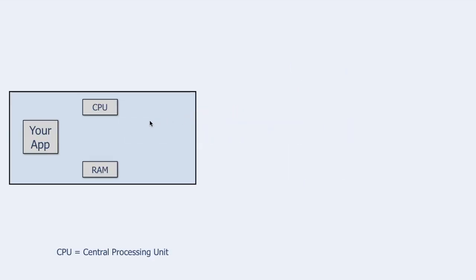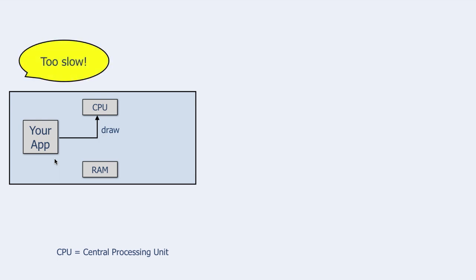Here is an illustration of your application and its environment. Your application can use the CPU and the memory. When it wants to make some graphics, it sends a draw instruction to the CPU. There is a problem when your application is a game — it is too slow.